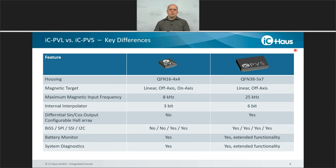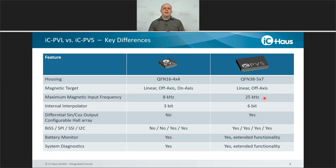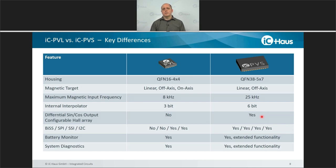Looking at the differences between PVL and PVS: the IC PVS comes in a much larger QFN 38 5×7 mm housing due to the internal hall sensor line. It is suitable for linear off-axis scanning — you cannot use it for on-axis scanning of a diametrical magnet. The maximum input frequency is much higher at 25 kHz, and the internal interpolator yields 6 instead of 3-bit resolution. You have a differential sine-cosine output, and in addition to SSI and I2C, IC PVS also features a BIS and SPI interface. The battery monitor and system diagnostics have been updated with additional features.